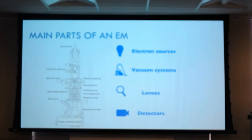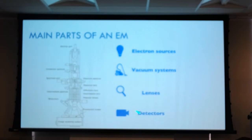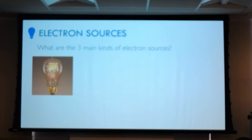Just like in a light microscope you have a light bulb, for an electron microscope you have an electron source. Because we're dealing with electrons we have to worry about electrons going through whatever medium — electrons cannot penetrate air very far — so we need a vacuum system. Just as light has glass lenses, EM actually uses magnets to bend electrons. And finally, like any good light microscope you need a detector — our detectors are actually movie cameras in a sense. So let's go into the different types. Does anyone know the three kinds of electron sources?